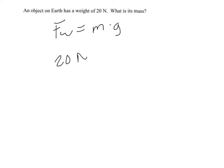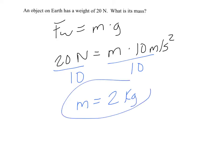In this case, you know the weight. You do not know the mass, but you know gravitational acceleration is 10 meters per second squared. So if you divide each side by 10, you will get the mass is equal to 2 kilograms. And that is the mass.